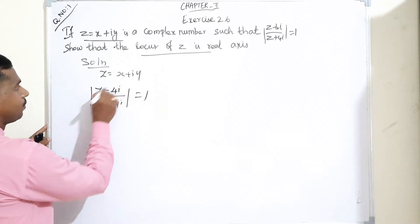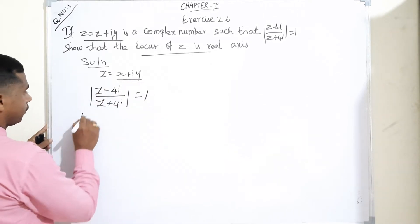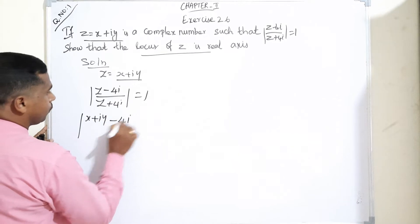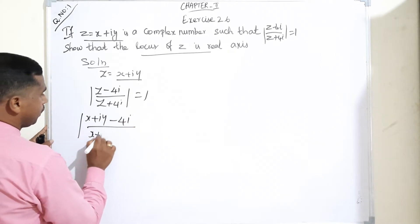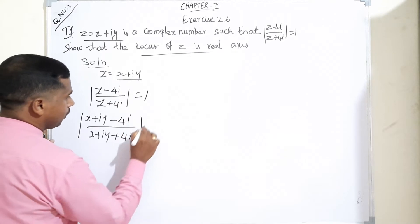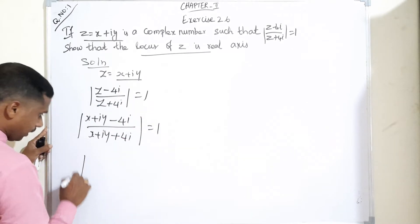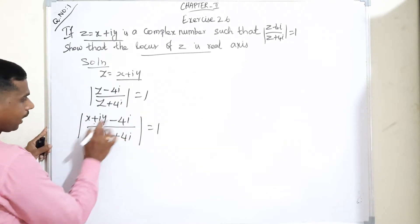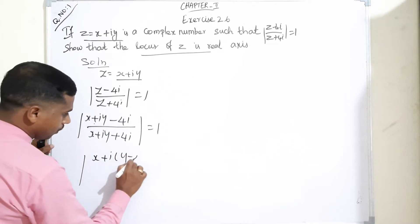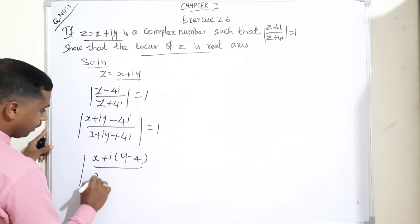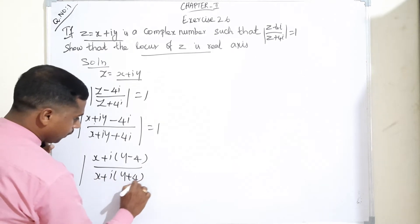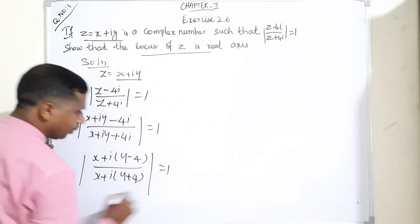Instead of z we have to apply x plus i y. So, x plus i y minus 4i divided by x plus i y plus 4i is equal to 1. Next, grouping real and imaginary parts: x plus i(y minus 4) divided by x plus i(y plus 4) is equal to 1.